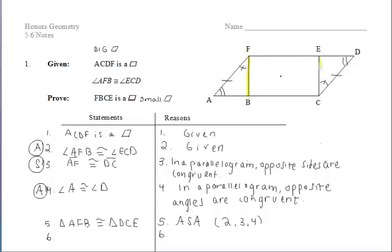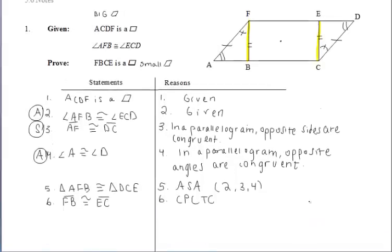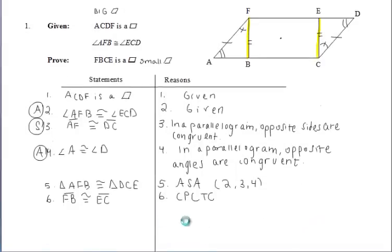Since the triangles are congruent, we can use CPCTC on segments FB and EC. If those segments are congruent, we have one pair of opposite sides congruent in our quadrilateral, and we're on our way to proving it's a parallelogram. We could try to show FB and EC are parallel, or we can show that FE is congruent to BC — getting both pairs of opposite sides congruent would be enough to prove it's a parallelogram.